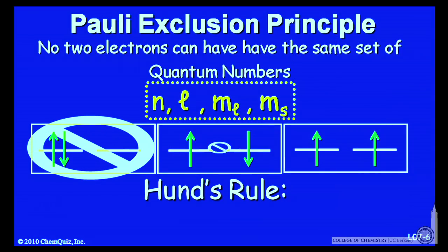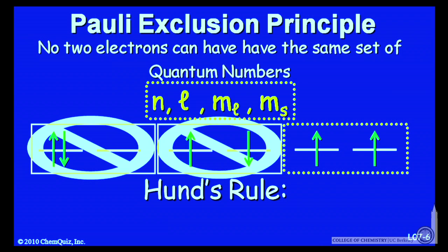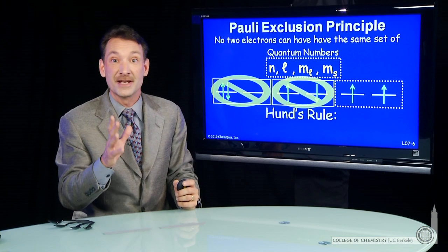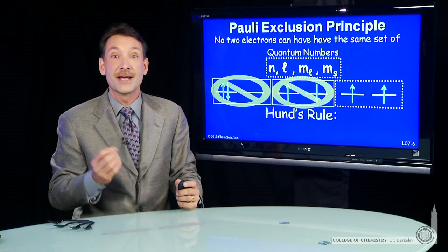And they go in spin parallel. So these two possibilities don't happen. These are higher energy situations. They're not disallowed by any quantum mechanical rules, but they're higher in energy.